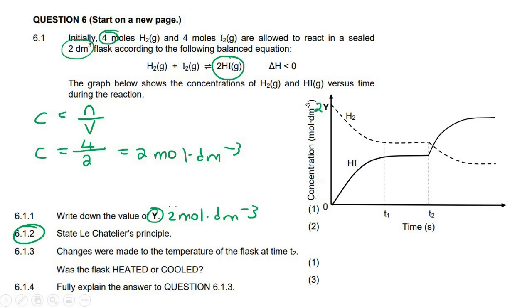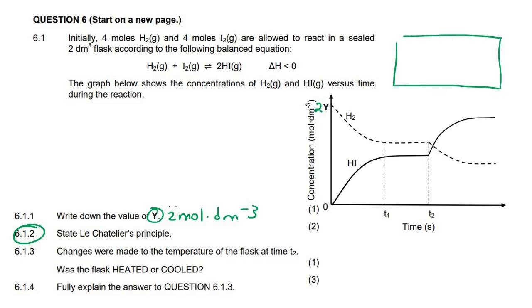The next one, state Le Chatelier's principle. So let's talk about Le Chatelier first and then we will get the definition. Le Chatelier was the person who discovered that if you have a system that is at equilibrium, so think about a chemical system that is at equilibrium.